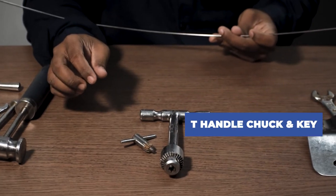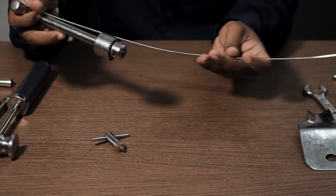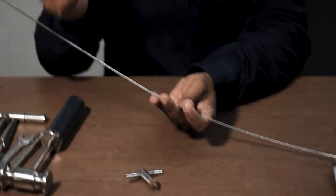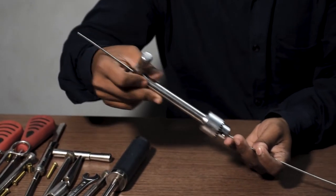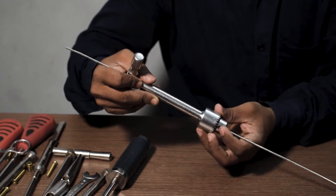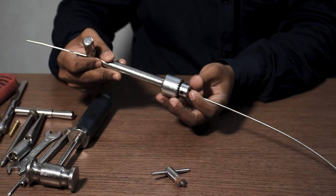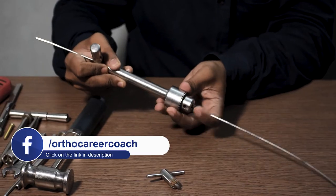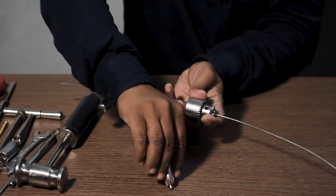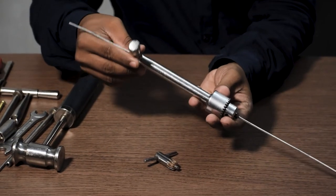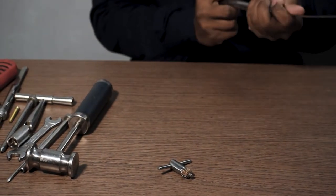This device is called a T-handle chuck with key. Now during the entry of the guide wire in the medullary canal, due to presence of blood in the gloves of the surgeon or the OT assistant, there is a chance of losing grip of the guide wire. That is when this T-handle chuck with key comes into play by holding the guide wire like this, and tightening it with the key like this, and thus we can pull, push, or rotate the guide wire with ease.